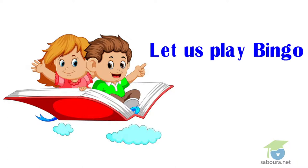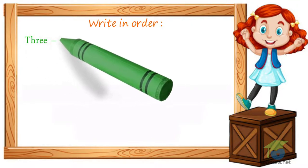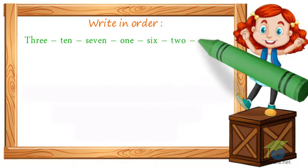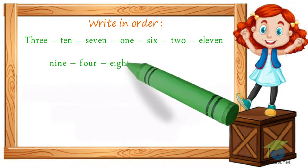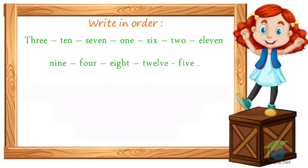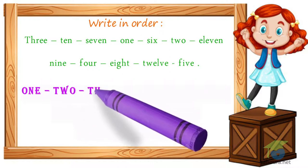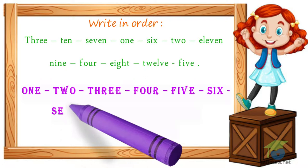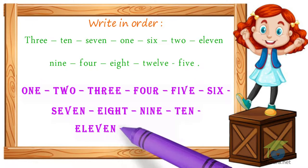Activities. Let's play bingo. Write in order: Three, Ten, Seven, One, Six, Two, Eleven, Nine, Four, Eight, Twelve, Five. The answer: One, Two, Three, Four, Five, Six, Seven, Eight, Nine, Ten, Eleven, Twelve.